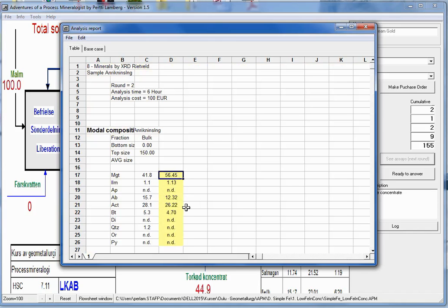We seem to have a lower magnetite head grade. Albite, actinolite, albite, biotite. So could this explain that we have a lower iron? This is difficult to say. We should probably compare the concentrate.